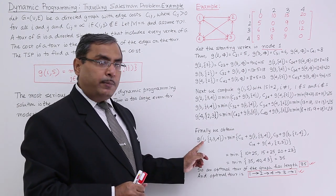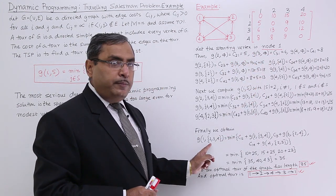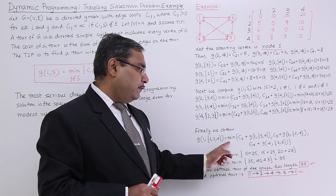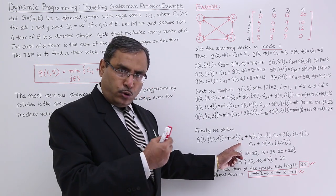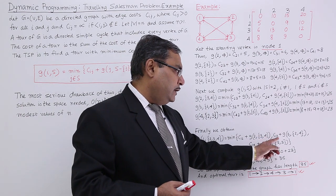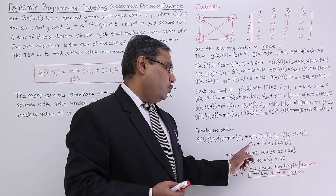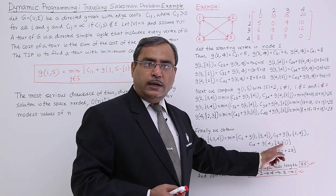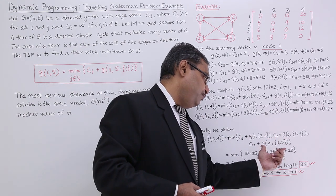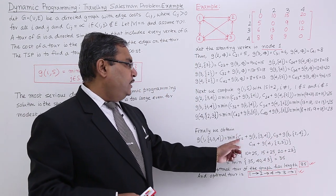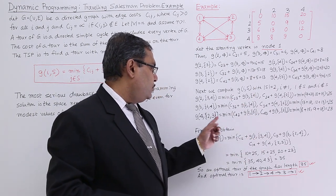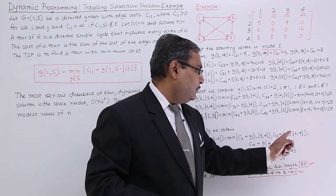That means I will be starting from node number 1 as I told you earlier. I shall be remaining with the nodes 2, 3, 4. It can happen in this way: minimum of C12, that means I am going to node number 2 from node number 1 and then from the rest, or 1,3 then 3 from the rest, or 1,4 then from 4 to the rest. These are the possibilities we are having, three possibilities. C12 means 10 and G(2,{3,4}) means I am getting that as 25.